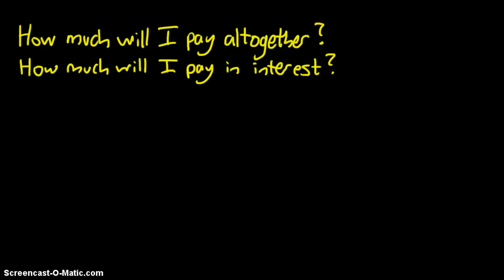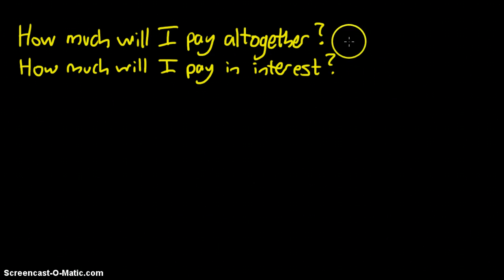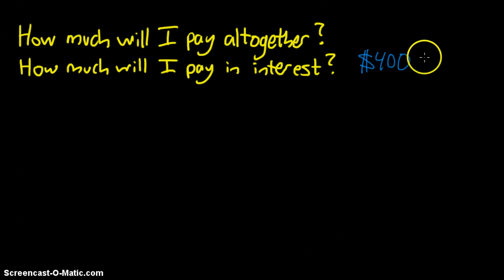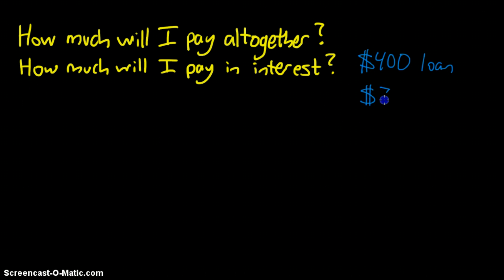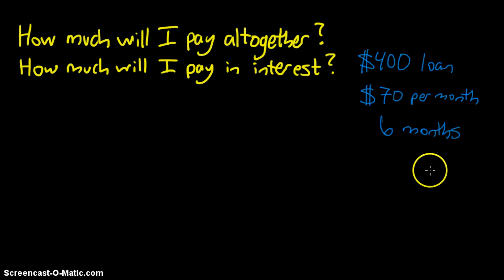The next set of questions we're looking at is: how much will I pay altogether when you take out a personal loan, and how much will I pay in interest on this loan? Let's look at an example. Let's say you're going to take out a personal loan in the amount of $400. When you go to the bank, they tell you you're going to pay $70 per month for a grand total of six months.